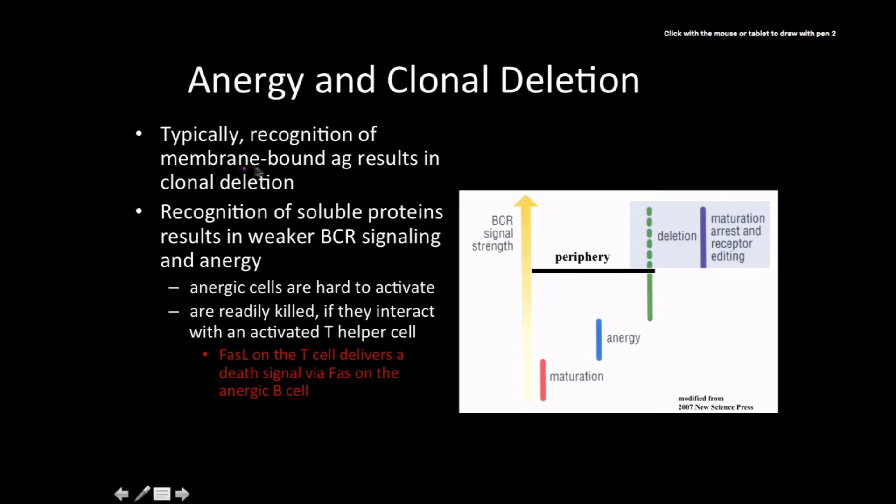For anergy and clonal deletion, recognition of membrane-bound Ig results in clonal deletion. Recognition of soluble protein results in weaker BCR signaling, and therefore we have anergy. Anergic cells are really hard to activate. They're readily killed if they interact with an activated helper T-cell. The FAS ligand on the T-cell delivers a death signal via the FAS on the anergic B-cell. But for the most part, assuming it doesn't contact a helper T-cell, it'll die through entropy. Things age, like we age.